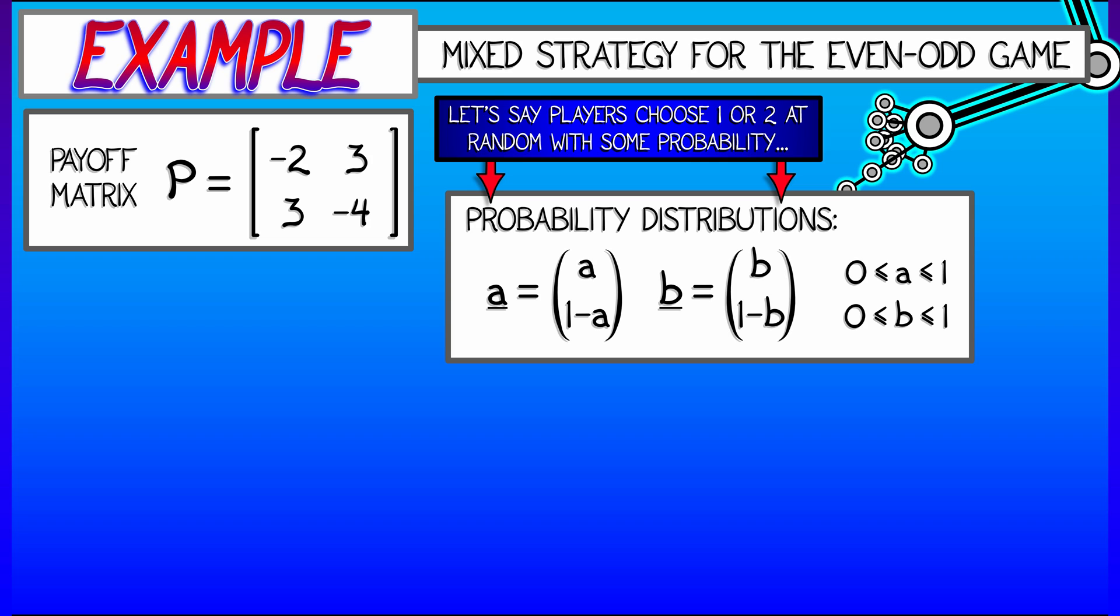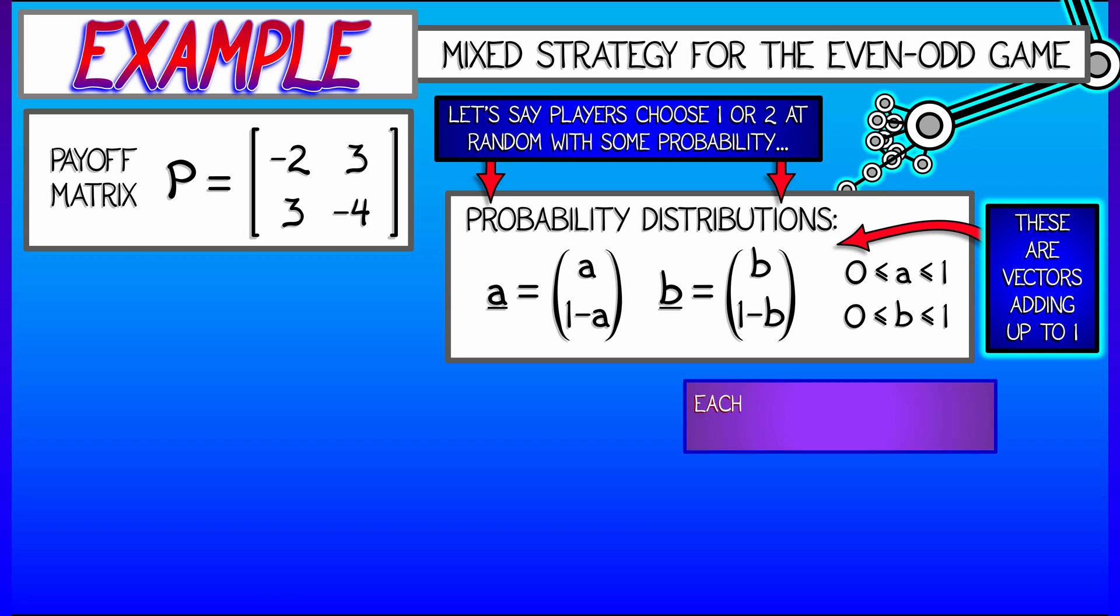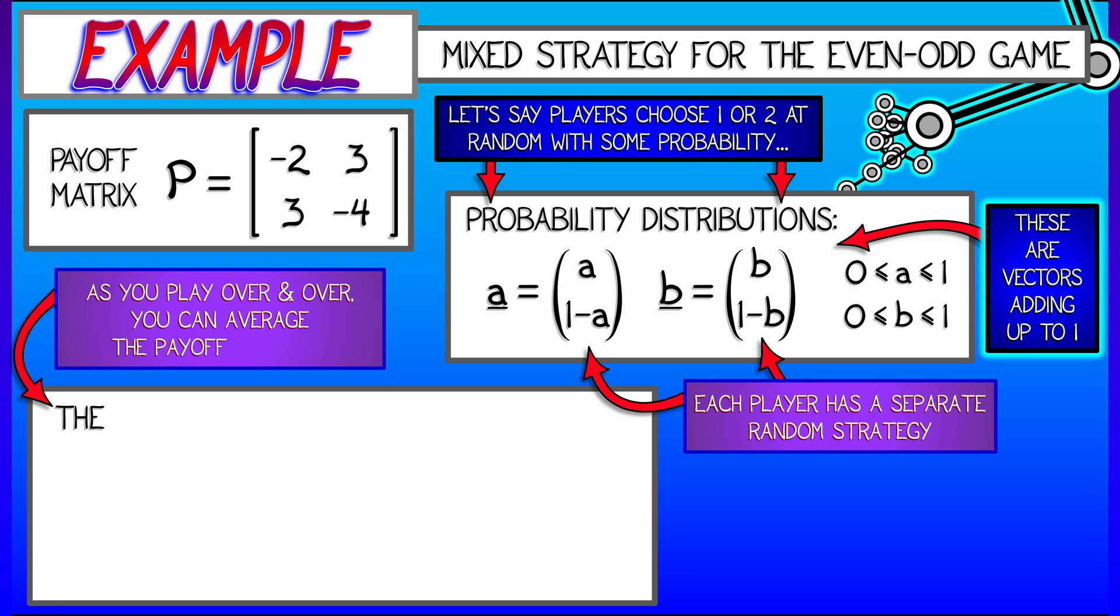Likewise with player B, given the vector B and 1 minus B. Now these are independent, right? Player A and player B can have different probability distributions. But what we're going to do is fix those and then play over and over again.